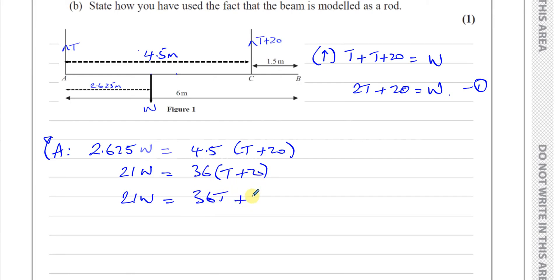Let's just simplify this. I think you divide by 3. 3 goes into these. All of them. 7W is equal to 12T plus 240. That's right.